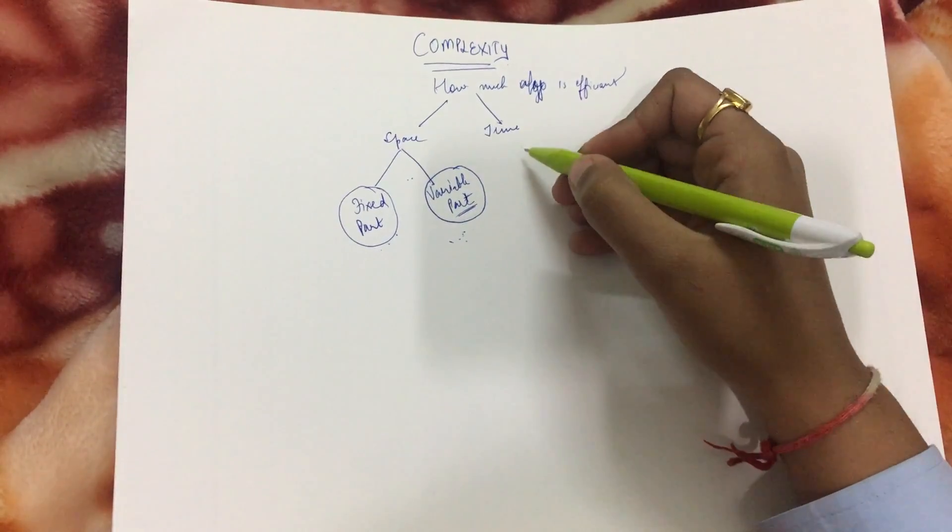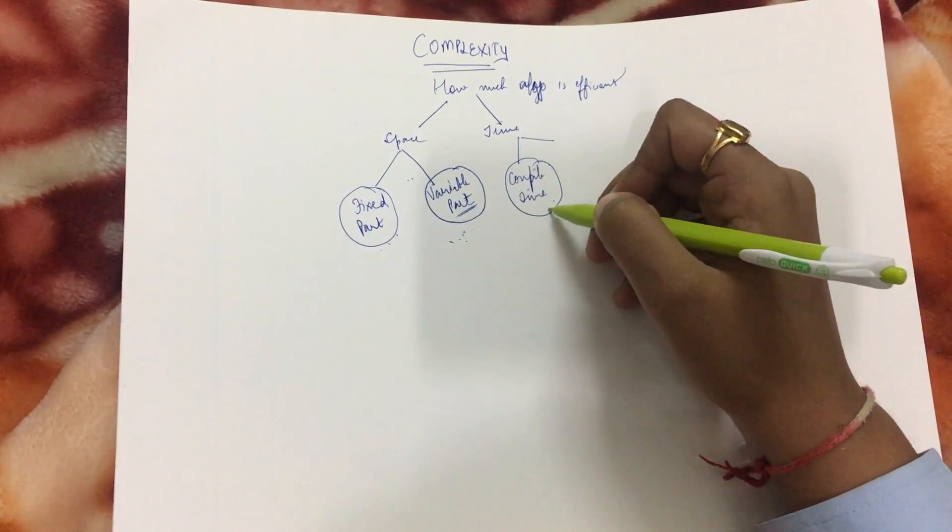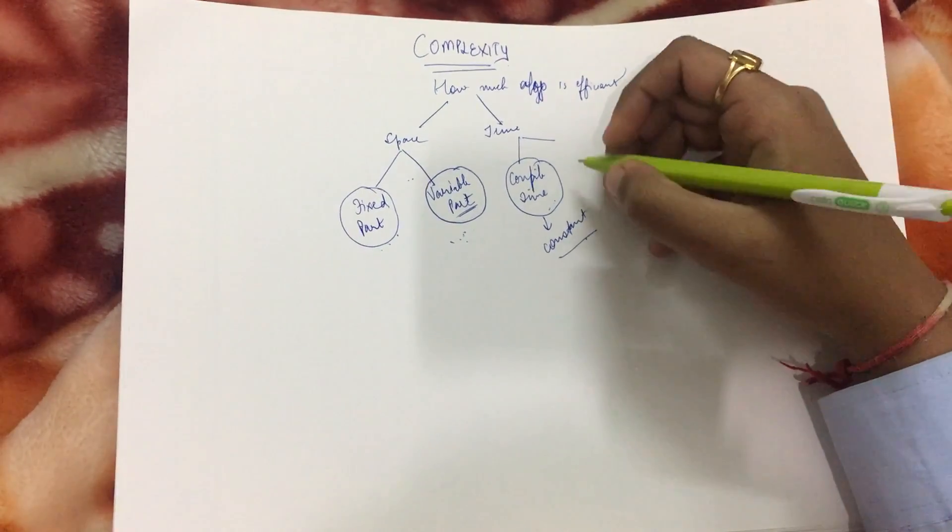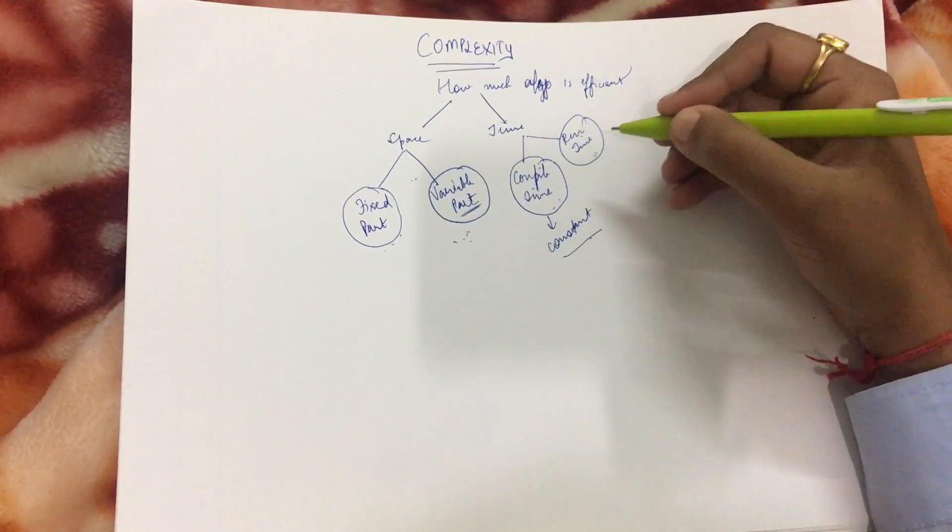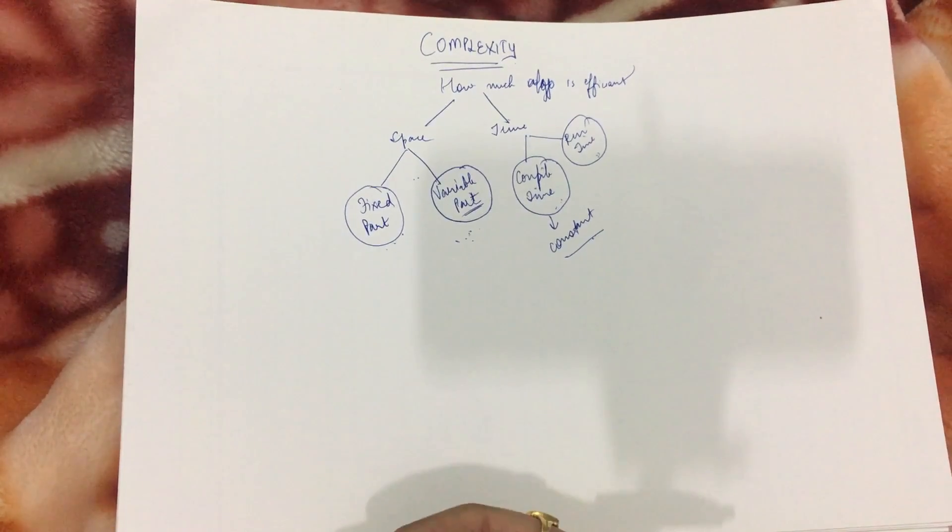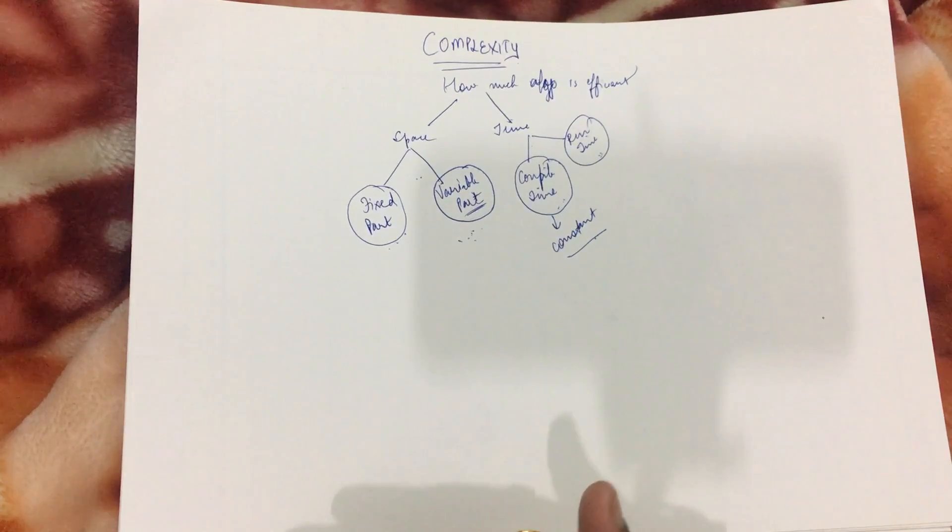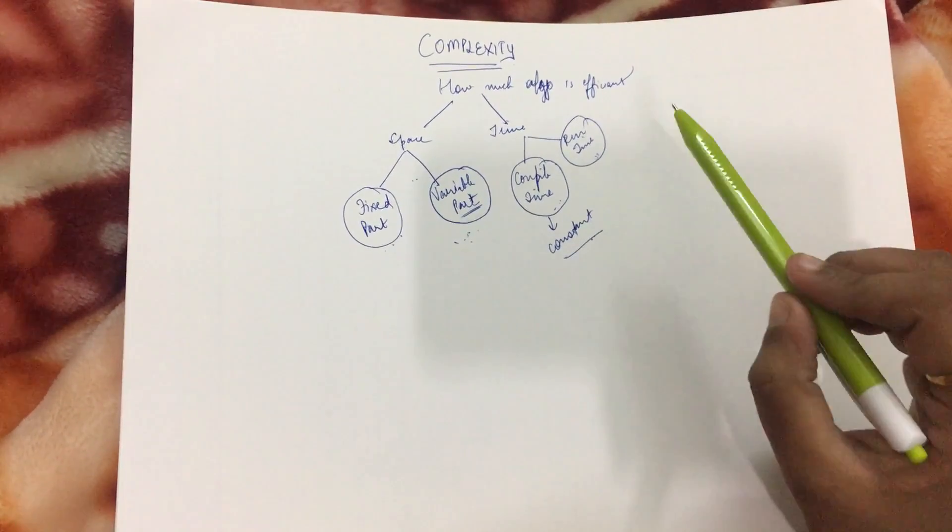Time complexity has compile time, which is how much time the program takes to compile. In most cases it is always a constant value and for most algorithms it is the same. Second is runtime, which will obviously vary according to the algorithm. For example, if you have to print numbers from 1 to n where n is entered by the user, if I enter n as 5, it takes 5 units, but if I enter n as 100, it will take 100 units. The runtime complexity depends from algorithm to algorithm.